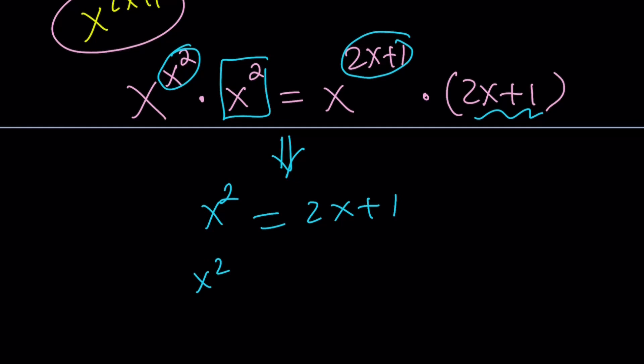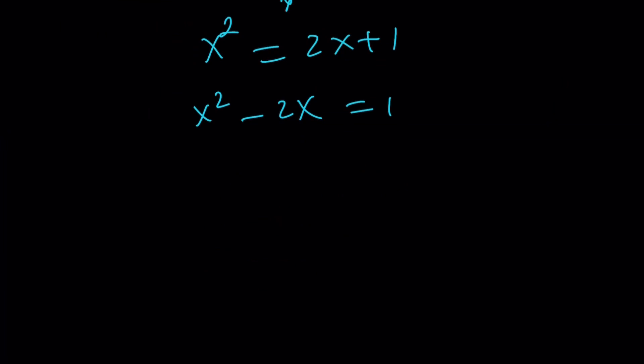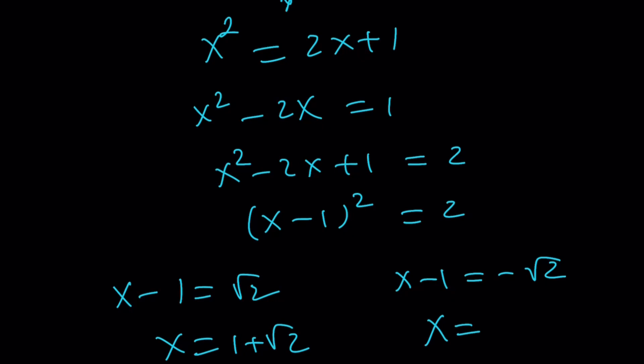So from here, I can just subtract 2x and add one to both sides. And write this as a perfect square. And everything is perfect. Everything is awesome. So I can write √2 and -√2. And guess what? We're going to get the exact same solutions. Those are going to be the x values. And let's take a look at the graph now.